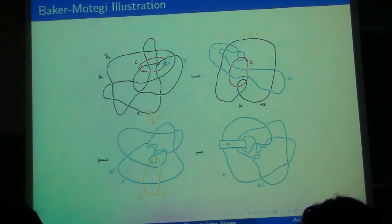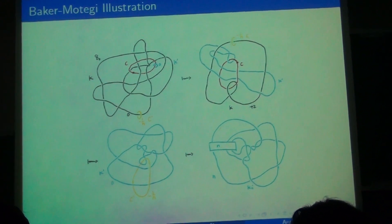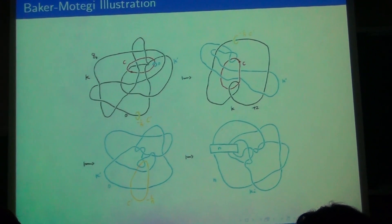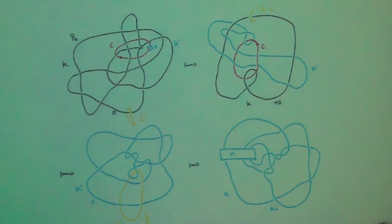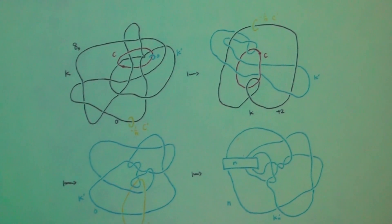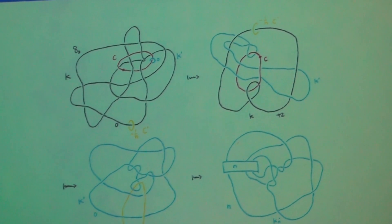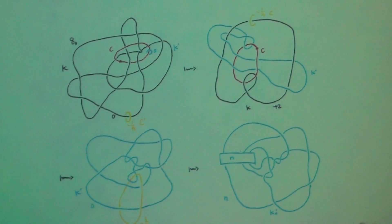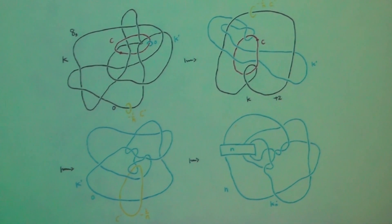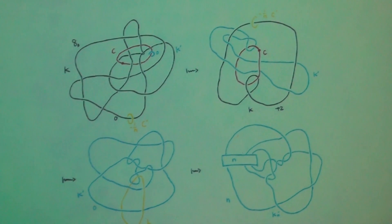To do that, we need to remove the black and red components from the diagram using Kirby moves. So the first thing we do is we slide black over red until we get the diagram on the upper right. And notice in this diagram, if we remove blue, then red is just a meridian to K. And we want to be able to remove red and black using a light bulb trick. So now to get rid of these extra crossings between blue and red, we slide blue over black in that middle region three times in this case.